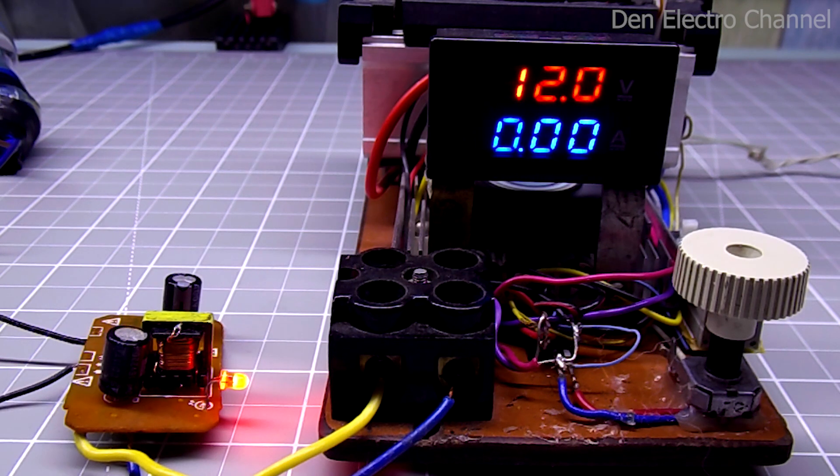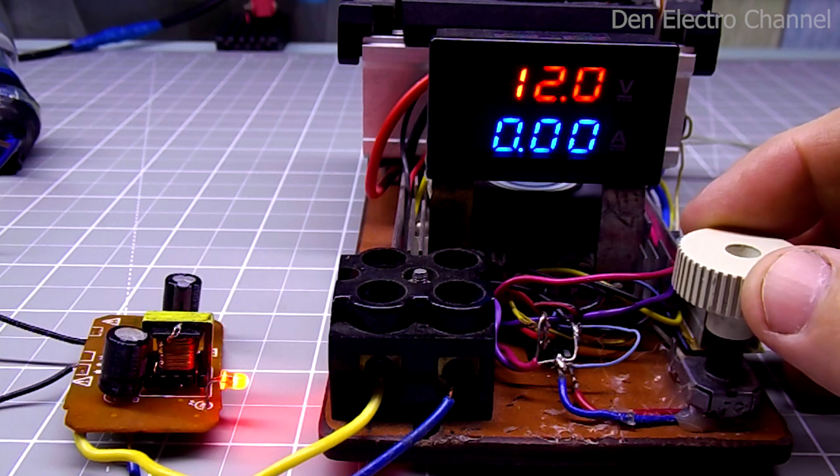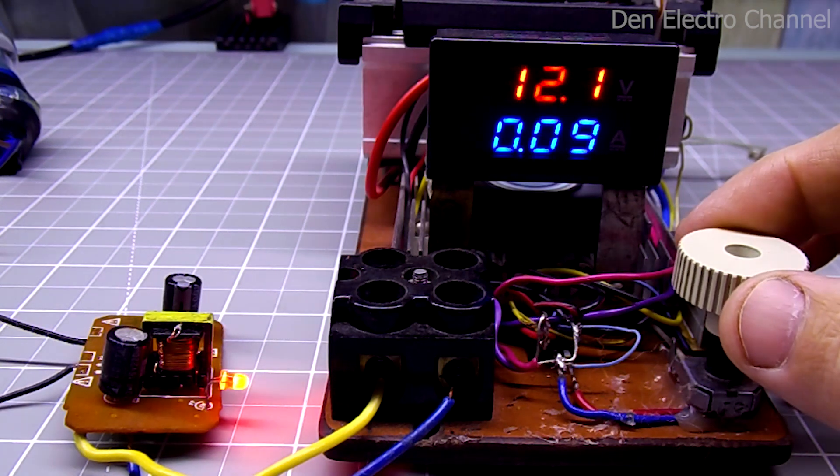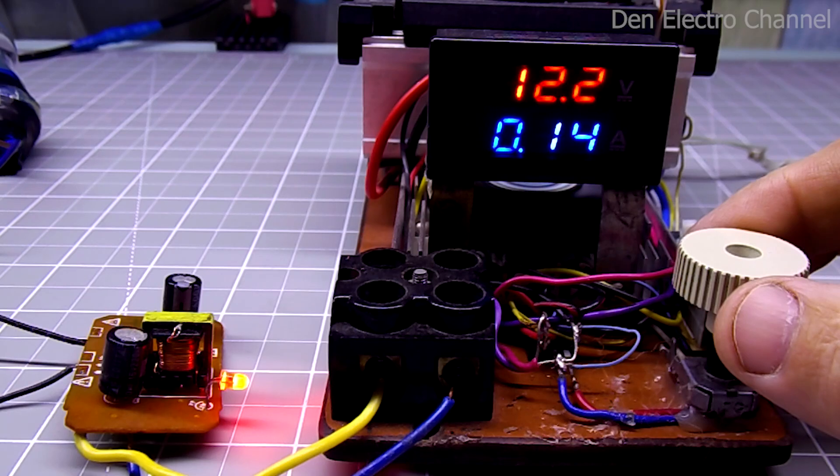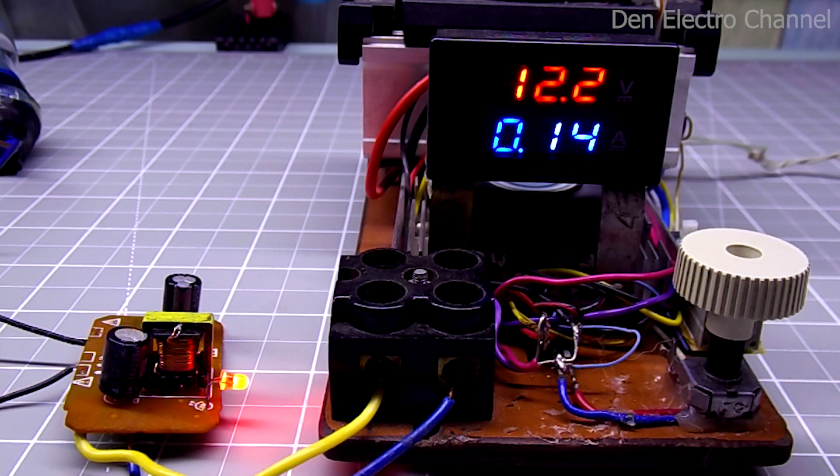Since I removed a couple of turns, the voltage is now 12 volts, not 13. As the current increases, the voltage also increases slightly. But the power supply cannot produce more than 140 milliamperes. At 150 the voltage already drops. The maximum turned out to be 12 volts, 140 milliamperes.